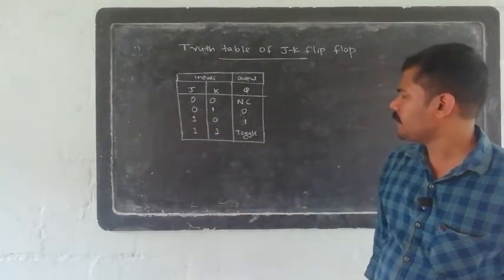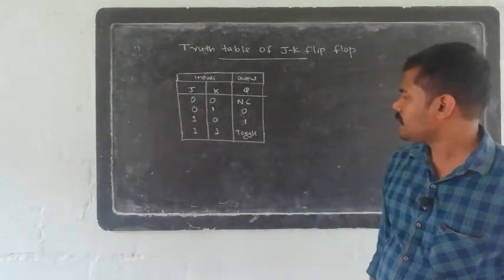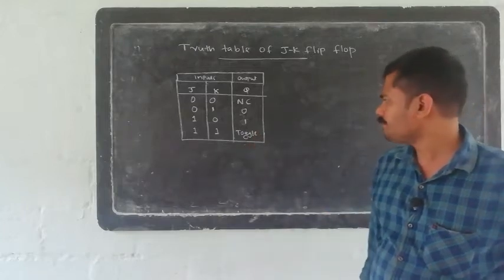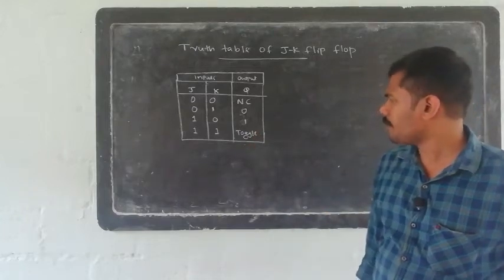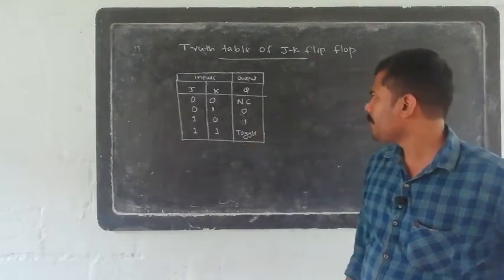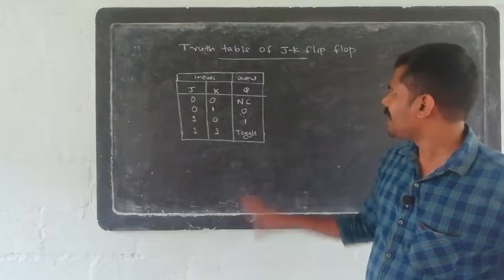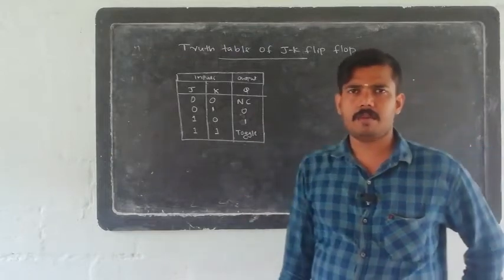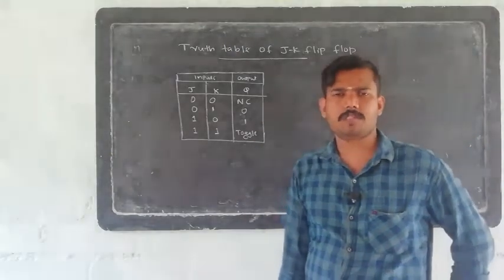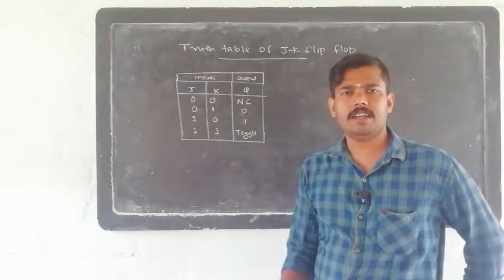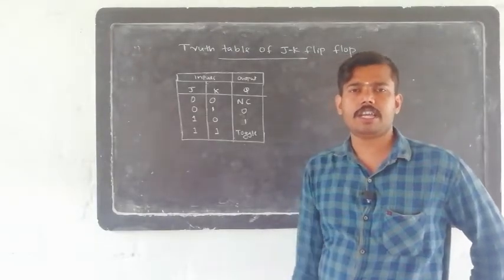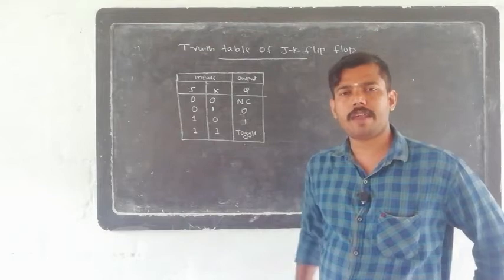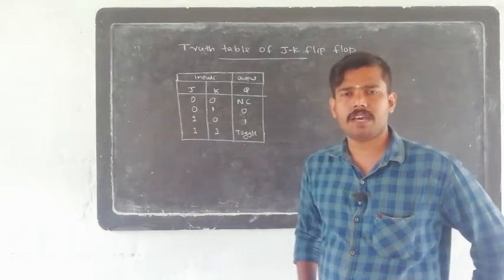In the case of the RS flip-flop, there is a toggle condition which is not allowed — it is not a valid condition. But in the JK flip-flop truth table, the toggle condition is valid. This is the general truth table of the JK flip-flop.